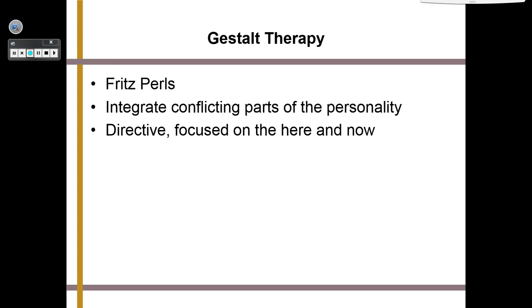Gestalt therapy is another form of humanistic therapy. The big name is Fritz Perls. It integrates conflicting parts of your personality, is very directive, and focused on the here and now. Gestalt therapy is imagination-heavy — all about role-playing and pretending people are in the room with you. One technique is the empty chair technique: we say the person you want to confront is tied to the chair, bound and gagged. They can't say or do anything, so go ahead and let it out. Through these role-play activities, we actually create a plan, experiencing best-case and worst-case scenarios to learn to adapt.